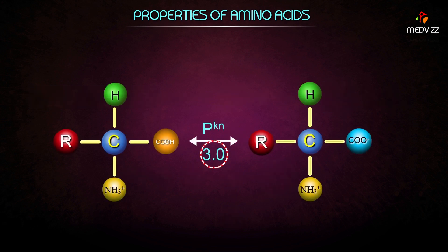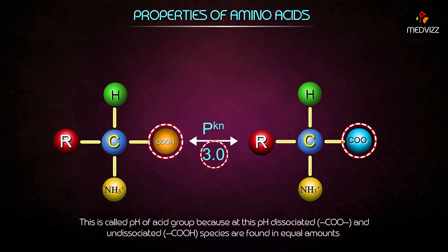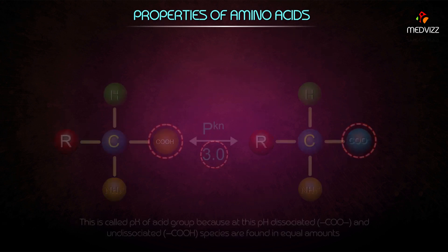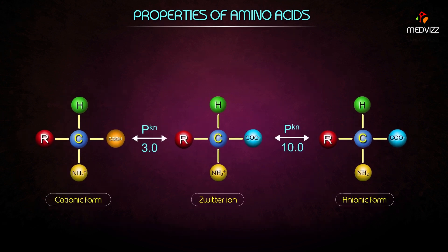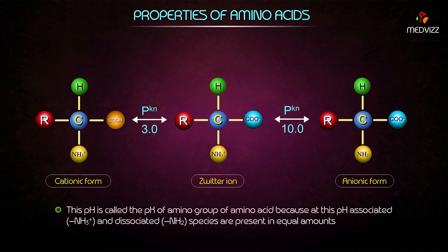When pH is raised, the proton from –COOH is lost and –COO⁻ is generated. This pH is called the pK of the acidic group, because at this pH dissociated and undissociated species are present in equal amounts. Similarly, when pH is increased to 10, the amino group dissociates to –NH₂. This pH is called the pK of the amino group.